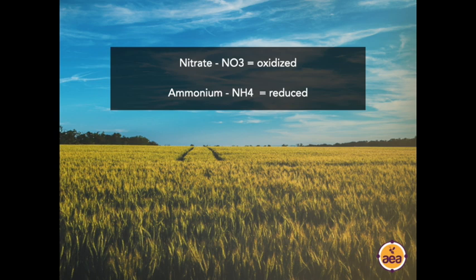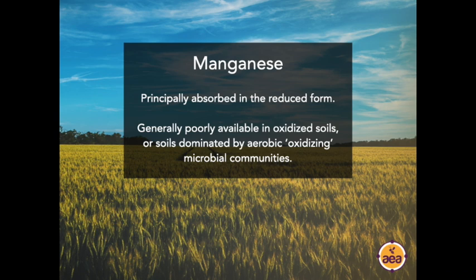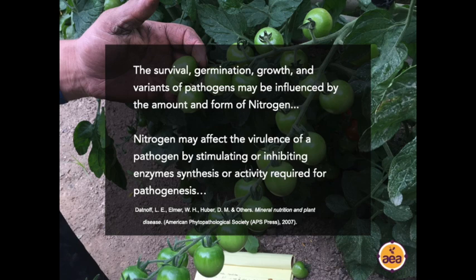Let's look at manganese. Plants primarily absorb manganese in the reduced form — it's not physiologically active in the plant in the oxidized form, and it is generally poorly available in oxidized soils. Even though a soil analysis shows you have generous levels of manganese, it's not very readily available. When you have soils dominated by aerobic, oxidizing, or nitrifying microbial communities, you're going to often have limited manganese availability. On sap analysis, we can even observe a correlation between the levels of manganese absorbed from the soil and the crop's degree of disease resistance.